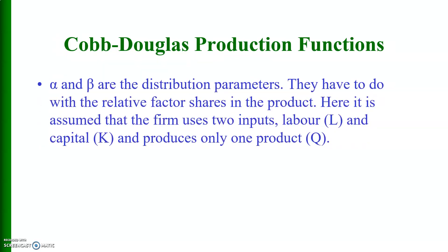Alpha and beta are the distribution parameters. They have to do with the relative factor shares in the product. Here it is assumed that the firm uses two inputs — labor and capital — and produces only one output Q.